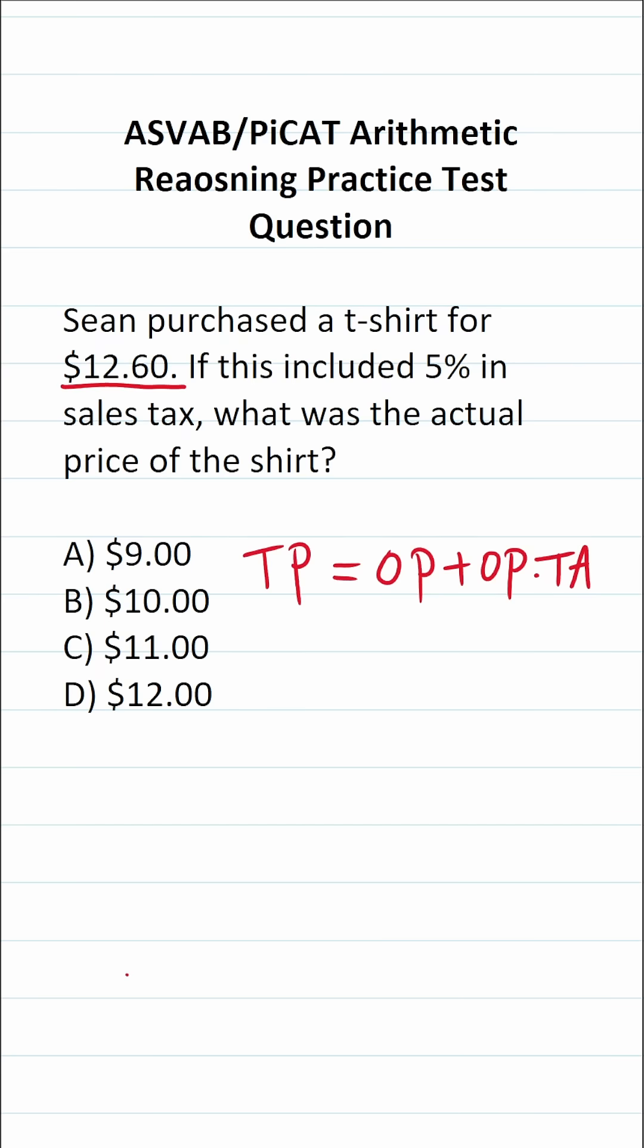In this case, we know that the total price of the shirt is $12.60. So this becomes $12.60 equals, we don't know what the original price of the shirt is. So this is original price plus the original price times the tax amount. We know that sales tax was 5%, which we're going to express in decimal form as 0.05. So this becomes original price times 0.05.